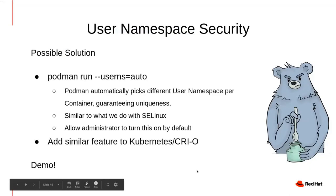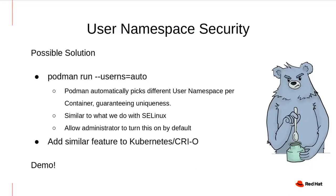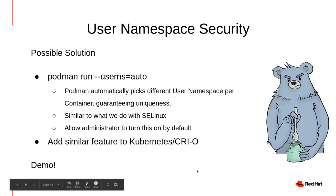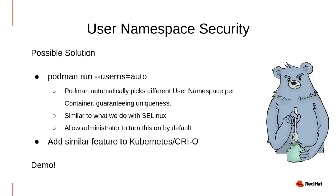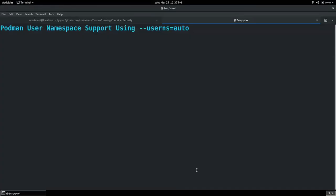That's a really great tool. But as we saw in the demo, every time we run a container and want user namespace support, we have to set a specific UID map for each container — which can be tedious to track if you're running hundreds of containers. To make it easier and help users move toward Papa Bear, we have a new flag in podman run called --userns. When you set this to auto, Podman will automatically pick a different user namespace for every container you run and guarantee uniqueness. We plan to test it completely in Podman, and once it's feature complete and stable, we'll add a similar feature to CRI-O and eventually Kubernetes.